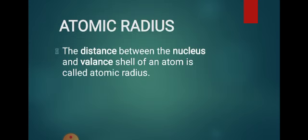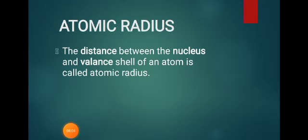Now, what is atomic radii? The distance between the nucleus and the valence shell of an atom is called atomic radii. Just like in mathematics where we measure from the center to the outermost point as the radius, in an atom the distance from the nucleus to the outermost shell is the atomic radii.